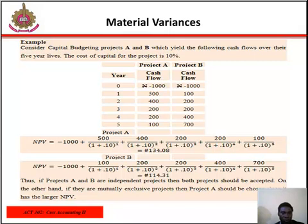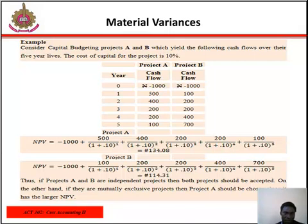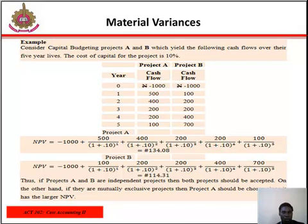For project A, the NPV is calculated as −1,000 plus the sum of cash flows of 500 discounted at 10% over the five years, giving approximately 104,000.08. Applying the same method to project B gives approximately 114,000.31. Since projects A and B are independent projects, both can be accepted. However, if they were mutually exclusive, project A should be chosen since it has the larger NPV: Project A = 104,000.8, Project B = 114,000.31.